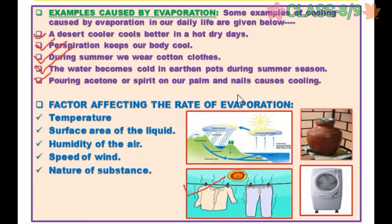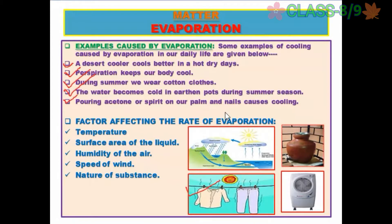During humid times, the outlet pipes of AC drain more water, which indicates there is more moisture in the atmosphere. You may have experienced that we feel more heat during the months of July and August as compared to May and June, though the temperature in those months is comparatively lower. This is due to higher humidity, because of which our sweat does not dry easily.